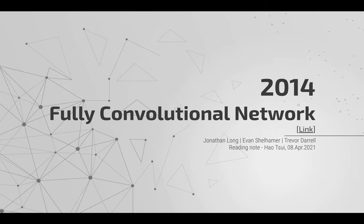One really famous paper is called Fully Convolutional Network. It is a work from 2017 by Jonathan, Yvonne, and Trevor. This is my personal reading note — I'm trying to bring you the high-level summary of this paper. By the way, it's been cited 20,000 times, so this is a really famous paper. If you want to go deeper, please click the link and you can go through the paper by yourself.